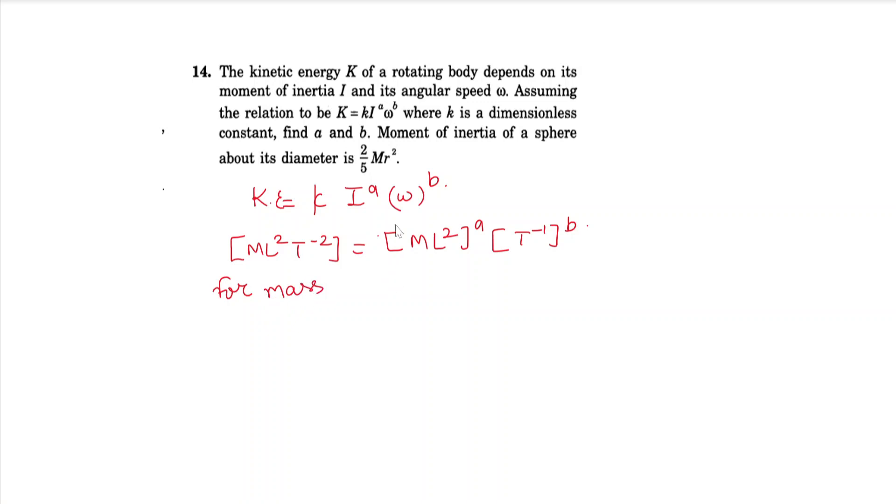The mass dimension is constant. On the left hand side, mass is to the power 1. On the right hand side, mass is to the power a, so a equals 1. Similarly for length. For time, left side equals right side.